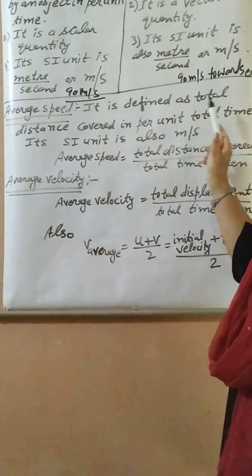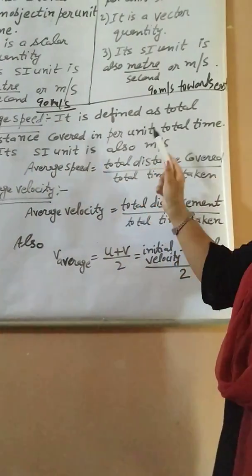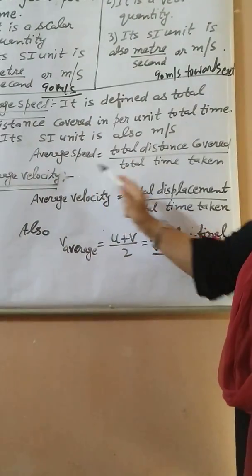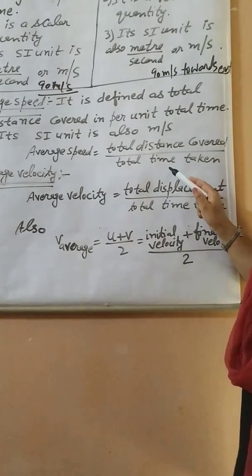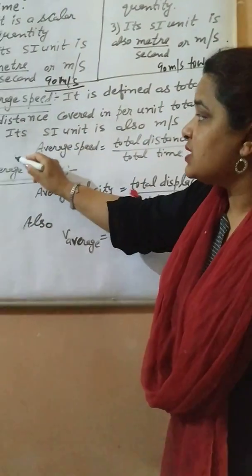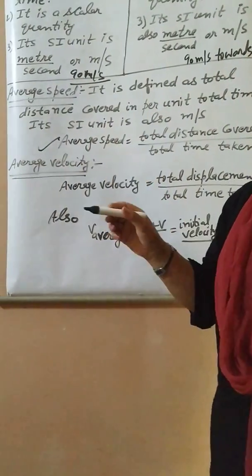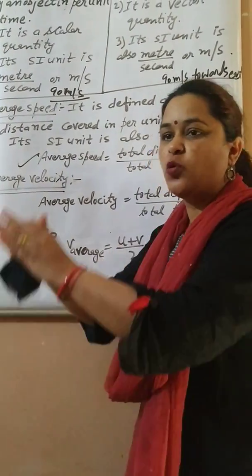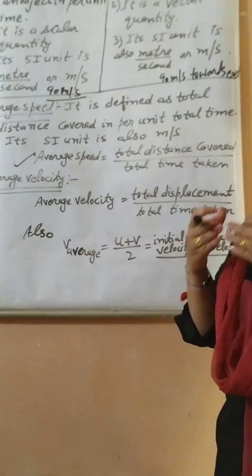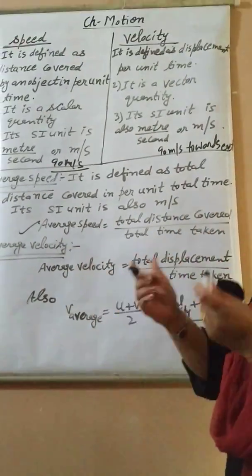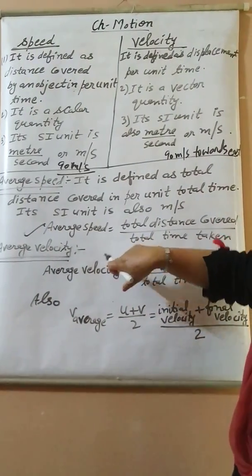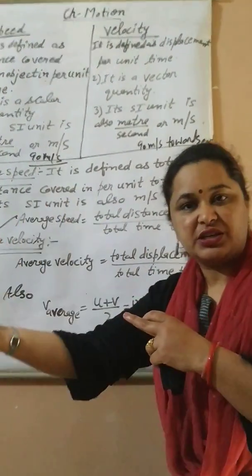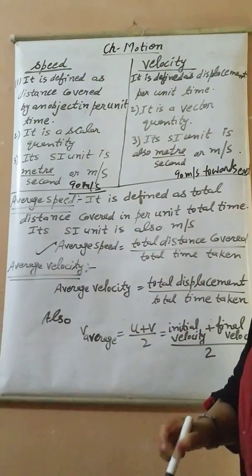So now the next is average speed. Average speed is defined as total distance covered per unit total time. Average speed equals total distance upon total time. This is required to calculate when, for example, 16 meters are covered in 4 seconds and 10 meters in 2 seconds — when different distances are covered in different times, we calculate average speed.